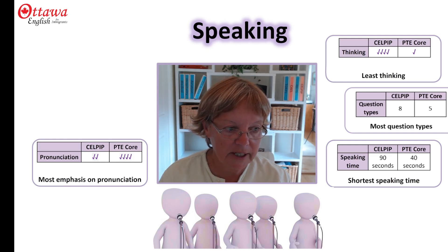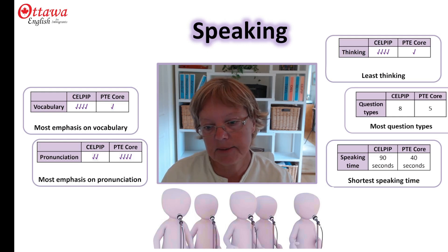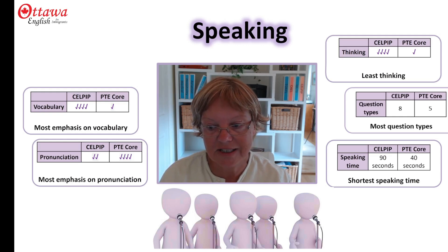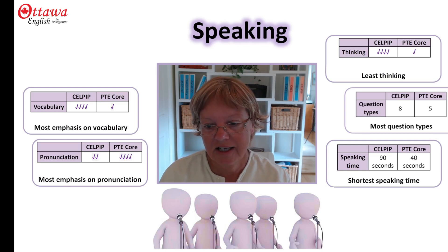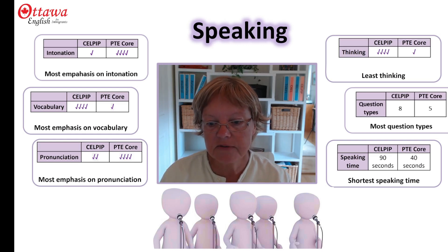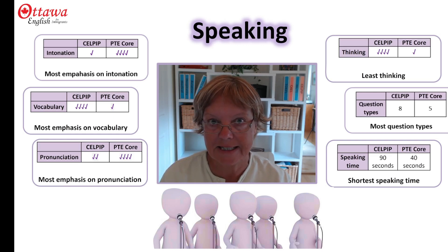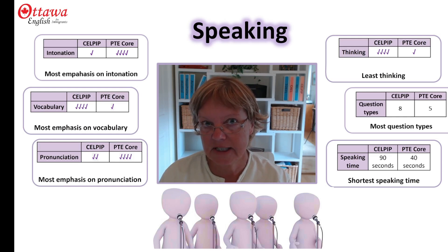CELPIP requires more vocabulary than PTE Core because you're constantly having to create and expand on your reasons in response to the prompts. And since PTE Core doesn't need you to expand and explain your ideas very much — just on that one question — you need a lot less vocabulary. PTE Core also tends to stress intonation more than CELPIP, especially on your nouns and your verbs. But since most of the sentences that measure your intonation are right in front of you where you can see the nouns and verbs coming up, and it's very easy to practice that when you read something, you may find that PTE Core is easier than CELPIP.